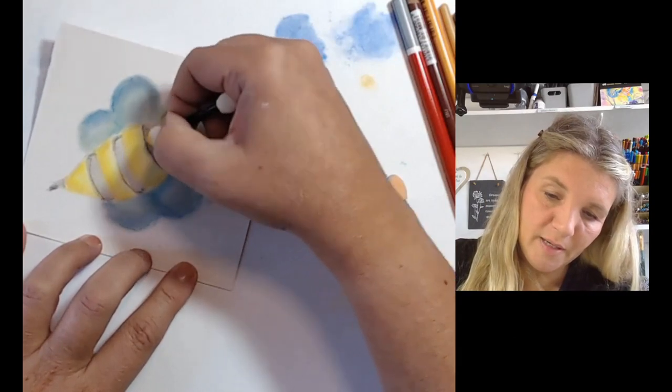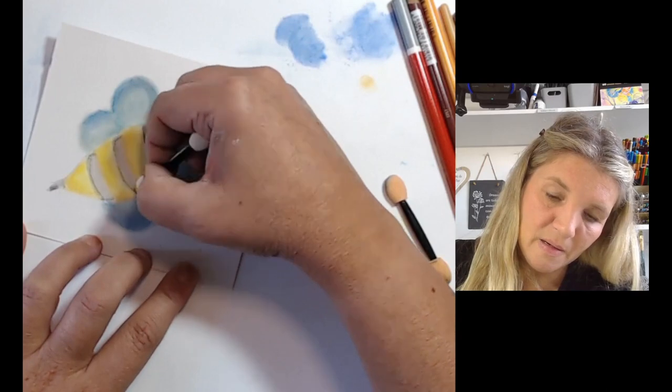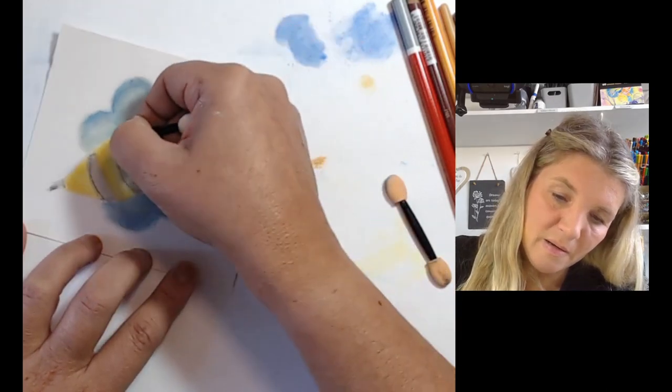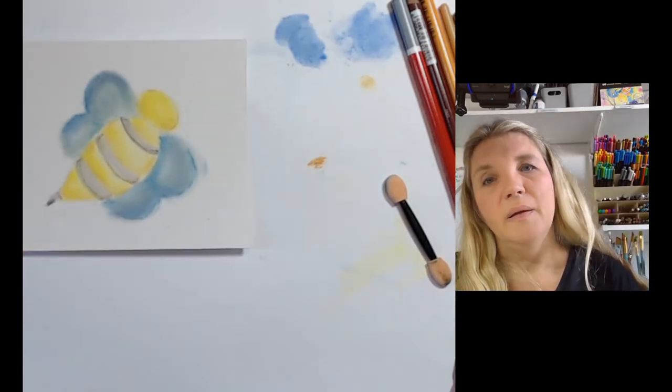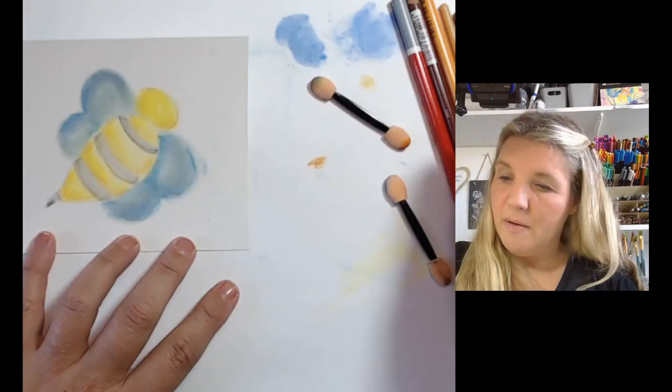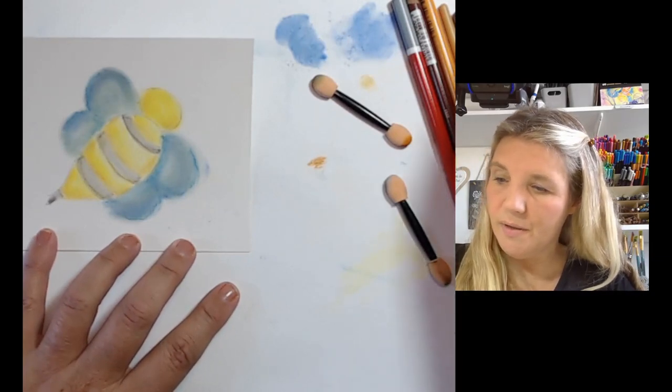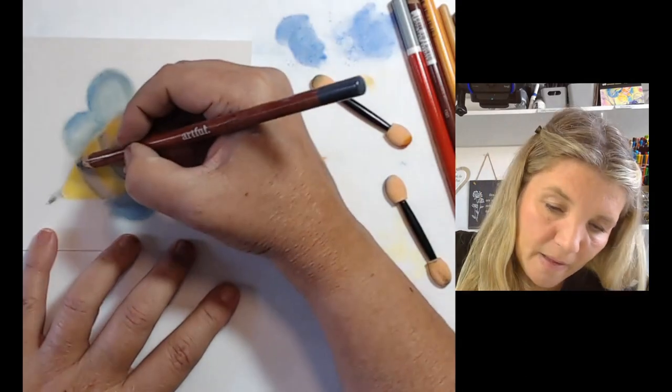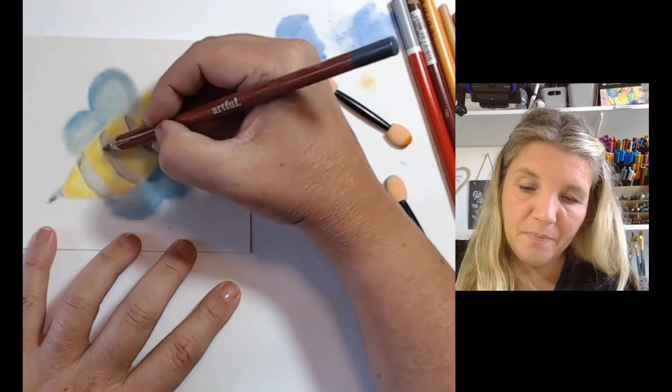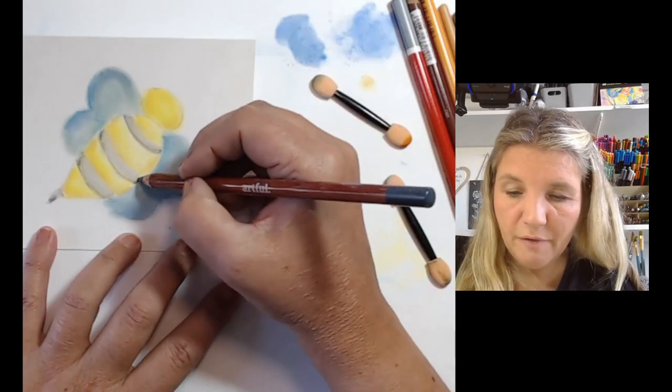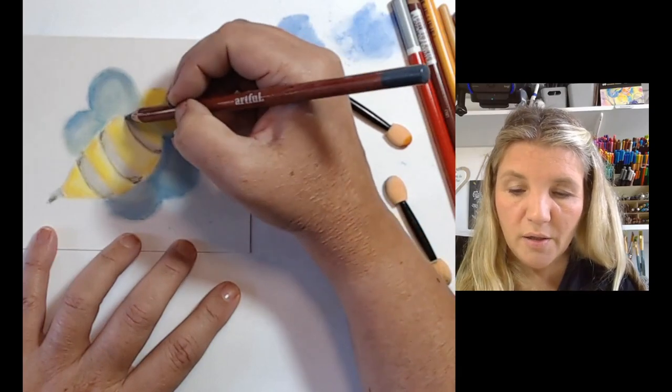All right, I'm going to smudge that in. Yeah, I think that's coming up quite nice. So let's find that darker gray again. Where did I just put it? There it is. I'm going to come in with a bit more definition.